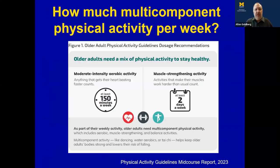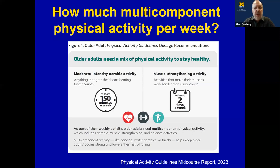How much exercise and physical activity should we do? According to the 2023 mid-course report — these guidelines come out every 10 years, with a mid-course report every five years — we should do moderate-intensity aerobic activity of at least 150 to 300 minutes per week. For vigorous-intensity aerobic activity, 75 to 150 minutes per week. Moderate activity is where you can talk but not sing; vigorous activity is where you can say only a few words.